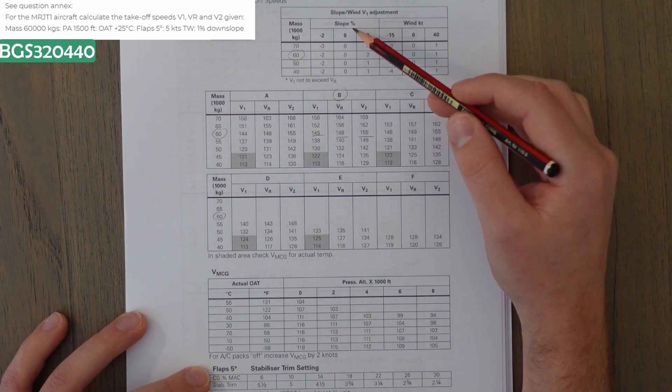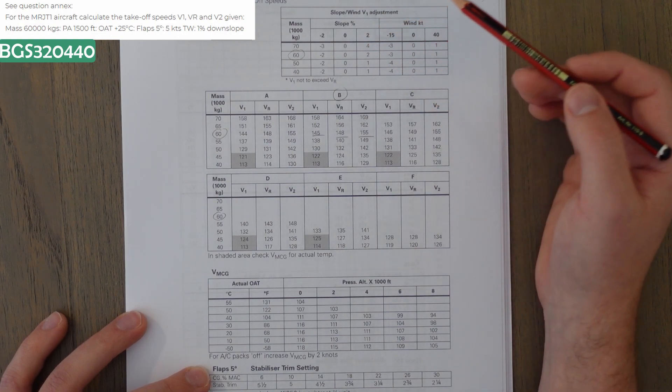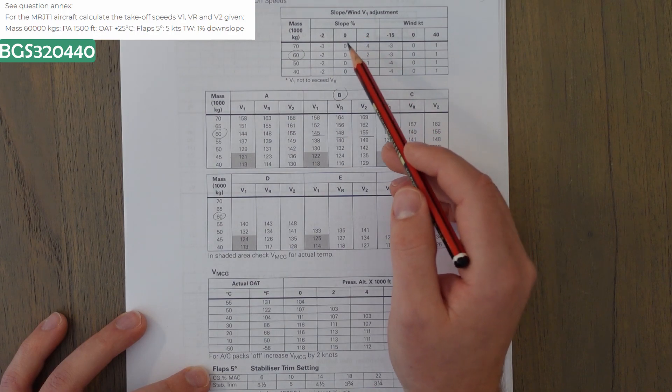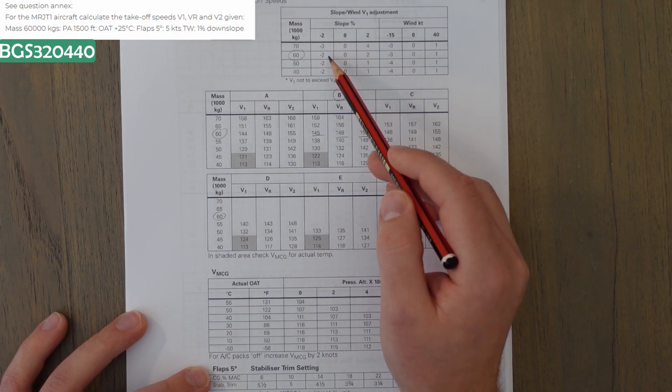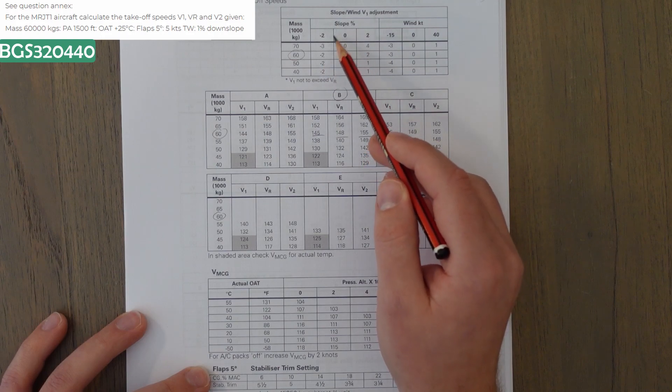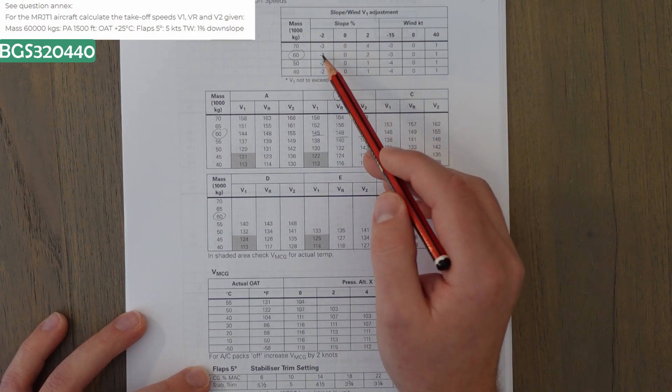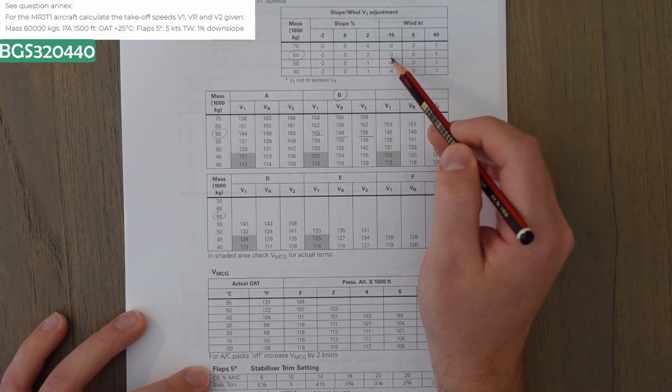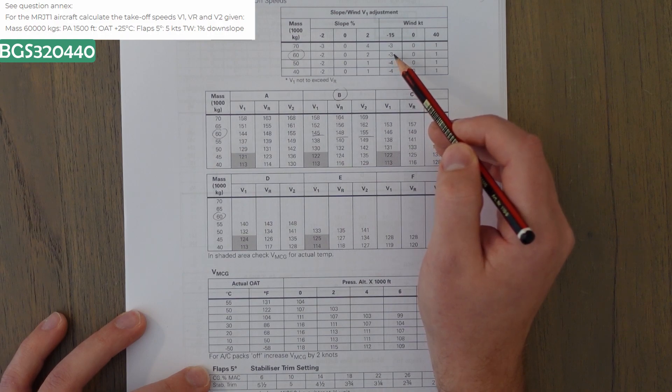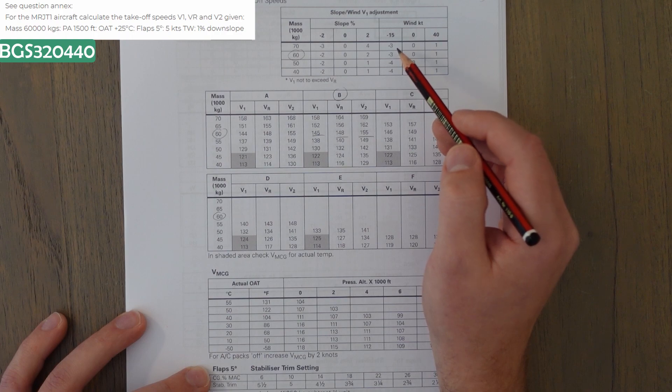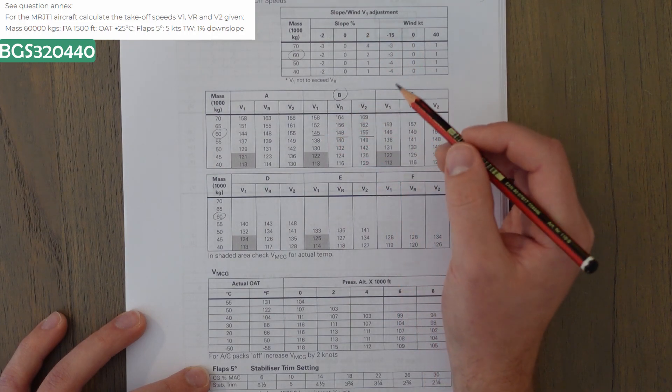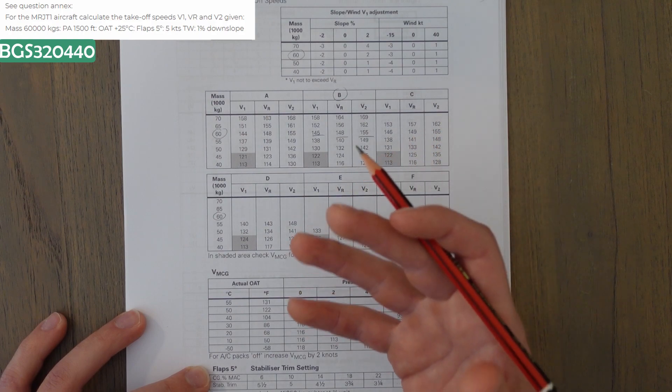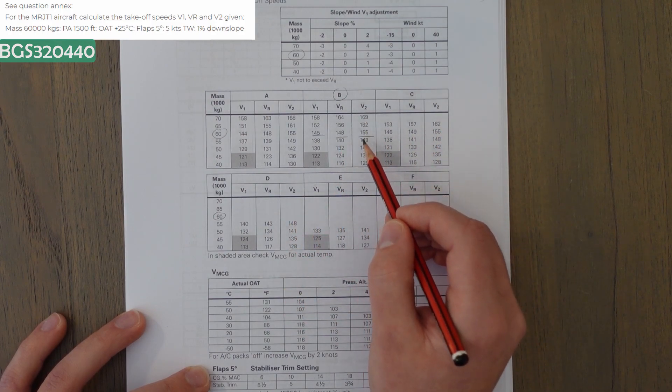So, the slope adjustment, we have to correct our 1% slope. It's a down slope. So, we will decrease the value. For 2%, it's 2%. So, for 1%, it must be 1%. So, we'll take 1 off our V1 speed. And then for the knots, we have 50 knots, which would take 3, but we only have 5. So, we take away another 1 knot, and it's 143 for V1. So, our answer is V1 of 143, VR remains 148, and V2 of 155.